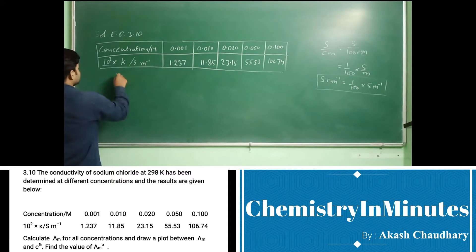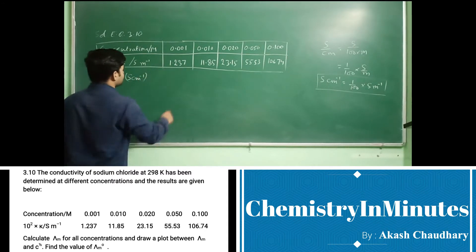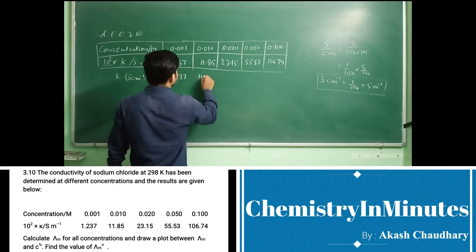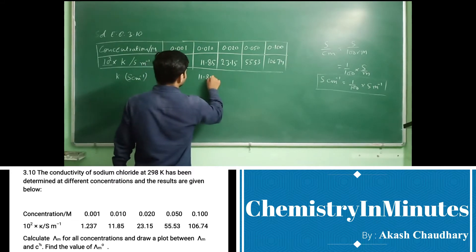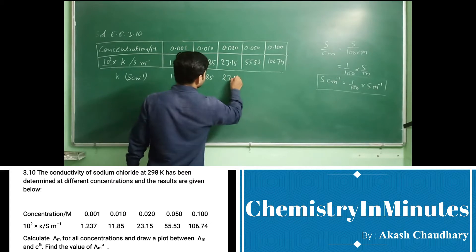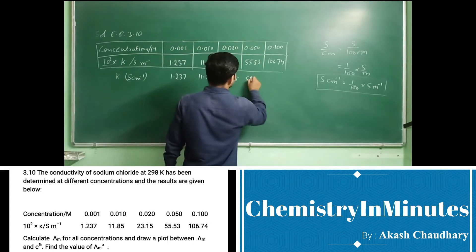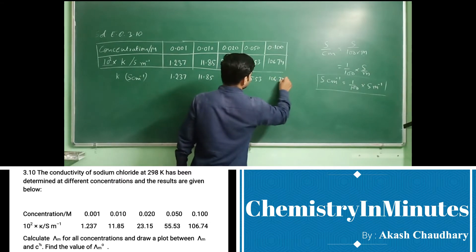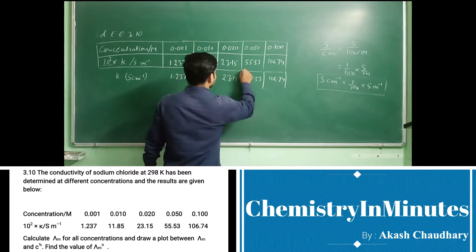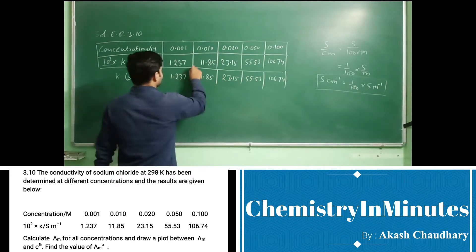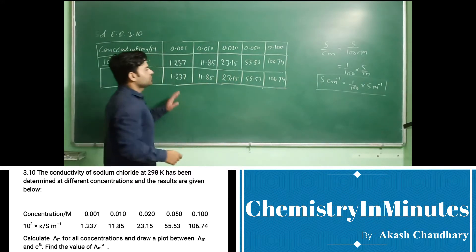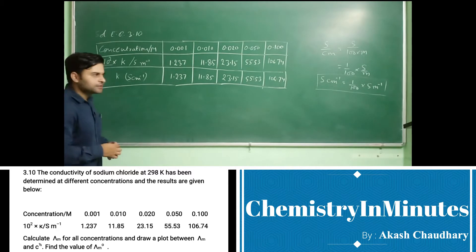So, the conductivity values in siemens per centimeter are: 1.237, 11.85, 23.15, 55.53, and 106.74. We are adding one more column to the table with these conductivity values in siemens per centimeter.